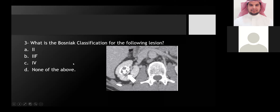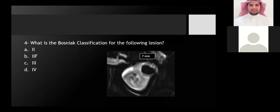The fourth case is a renal cystic lesion with a smooth, thick wall measuring more than seven millimeters. More than 60% chose option three, which is the correct answer.